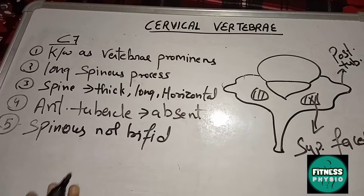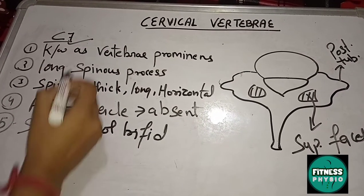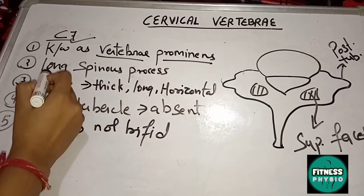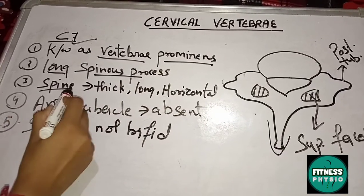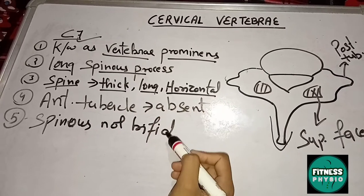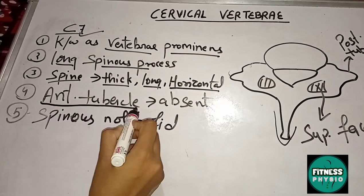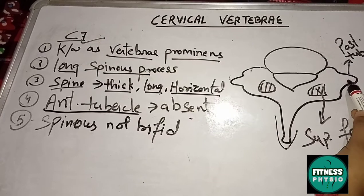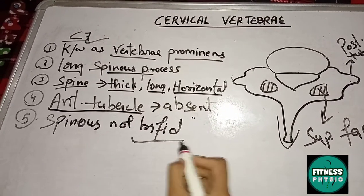C7 cervical vertebra is also known as the vertebral prominence. It has a long spinous process that is thick, long, and horizontal, which can be easily palpated. The anterior tubercle is absent in C7, but the posterior tubercle is present, and the spinous process is not bifid.